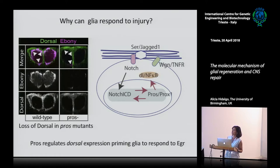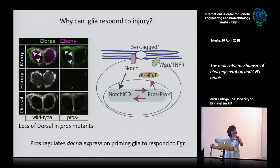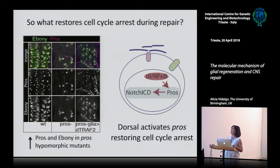Prospero allows Dorsal to be present in the cytoplasm, inactive, but enabling the glia to be ready to respond to injury - priming them for a response to injury. When you have an injury, then the glia can internalize Dorsal into the nucleus.